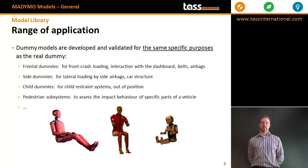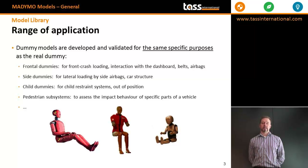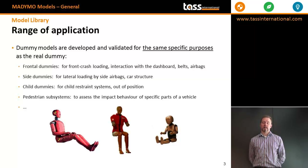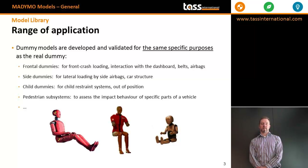Side dummies look more closely at lateral loading by side airbags and the car structure. Child dummies are designed to interact with child restraint system models and for out-of-position analyses. The pedestrian subsystems are designed to optimally assess impact behaviour with specific parts of the vehicle: the bonnet or hood, the front bumper, and the windscreen.